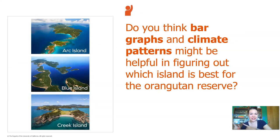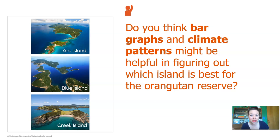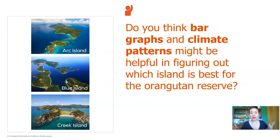Do you think bar graphs and climate patterns might be helpful in figuring out which of the three islands would be best for the orangutan reserve? I think so too. I hope we can get some climate data across many years for all three islands. Then we could compare them and see which one would have the best weather over the long range for the orangutans.